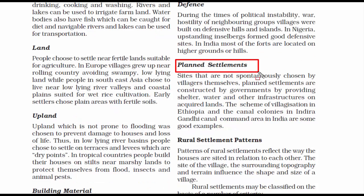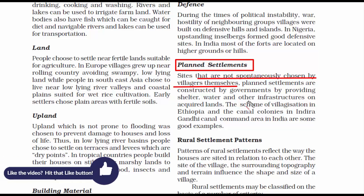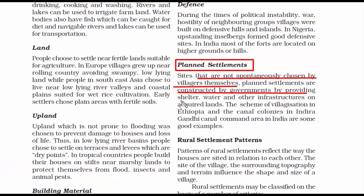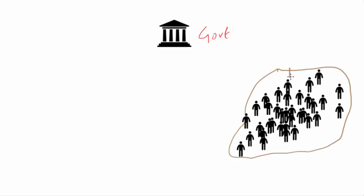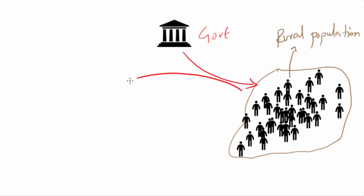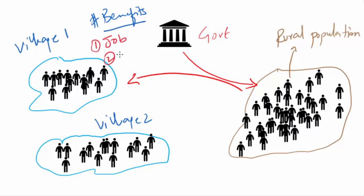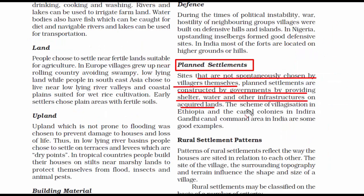Now we read about planned settlements. These are settlements constructed by governments — not randomly chosen by people themselves. Governments build planned settlements because of overcrowding, relocating rural populations with benefits like better living conditions and jobs. The scheme of villagization in Ethiopia and the canal colonies in the Indira Gandhi Canal, which flows through Punjab, Haryana, and Rajasthan, are good examples of planned settlements.